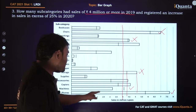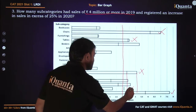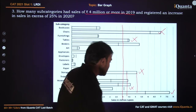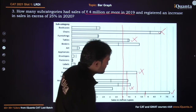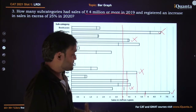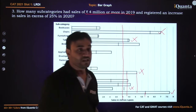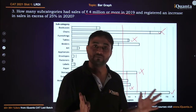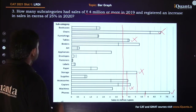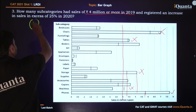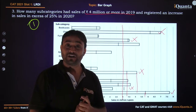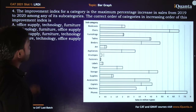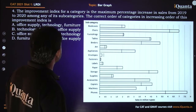For machines there was a negative change, so crossed out straight away. For phones, the 2019 value was around 5.75 and 2020 was 7.7 — that change is definitely more than 25 percent. So there is only one subcategory where the change was in excess of 25 percent. Very easy question.